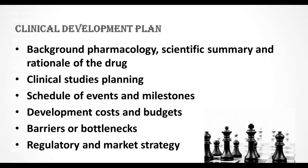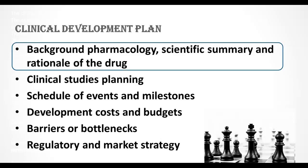The clinical development plan can be considered as a strategy document. The content of the document provides key decision points, go/no-go criteria, and overall risks and contingency plans. Typical contents of a clinical development plan include background pharmacology, scientific summary, and rationale of the drug. This section summarizes pharmacological properties of the drug — what is known, what is not known, potential target populations, indications, etc.